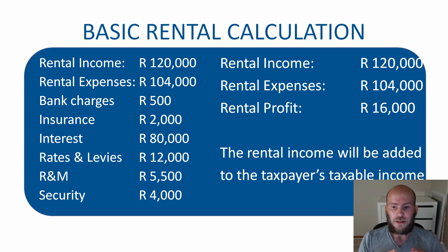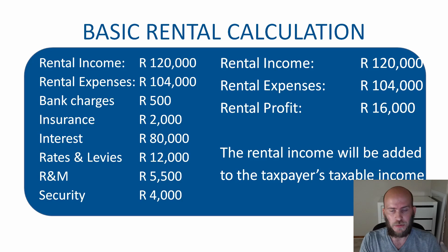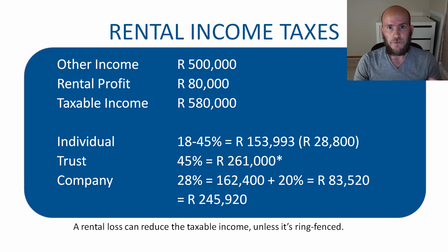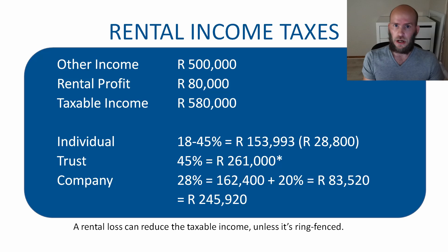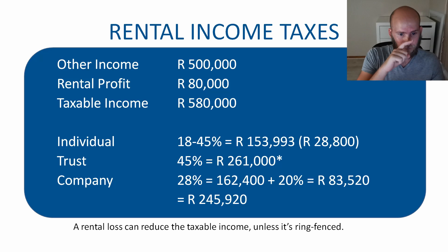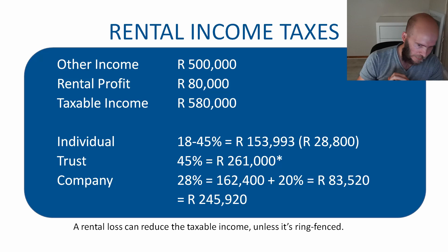That leaves a rental profit of $16,000, which will be added to the taxpayer's taxable income. In this example I've used an individual with other income of $500,000 and rental profits across various rental properties of $80,000, leaving them with a taxable income of $580,000.